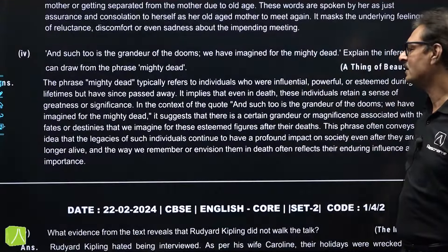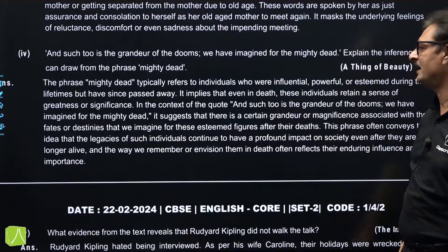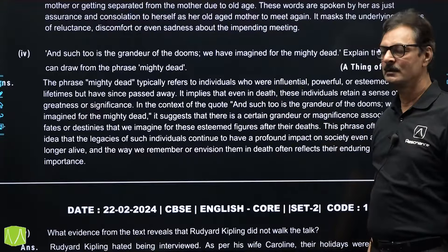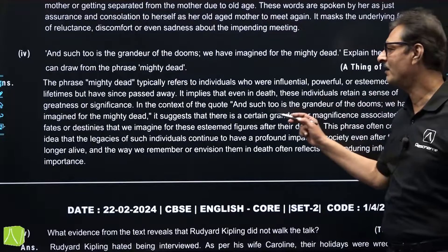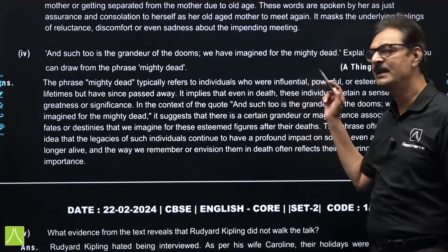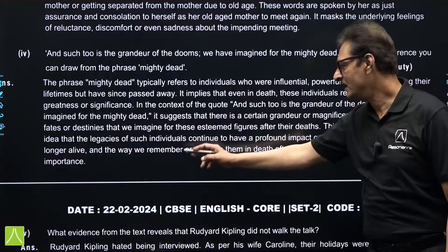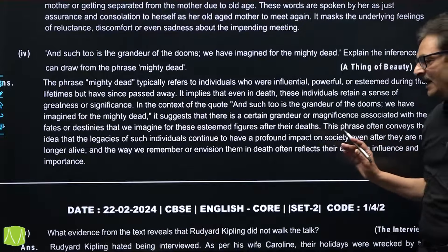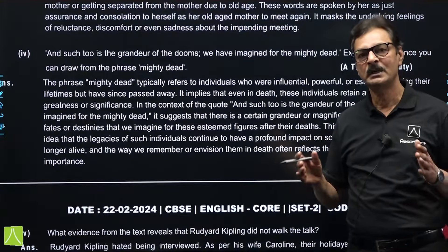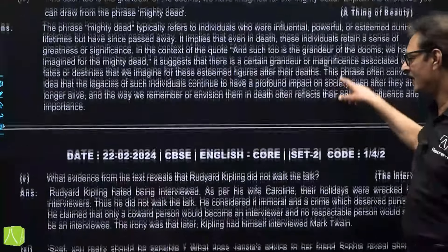The next question from 'A Thing of Beauty': explain the inference that can be drawn from the phrase 'mighty dead.' The phrase mighty dead typically refers to individuals who were influential, powerful or esteemed during their lifetime. Since they have passed away, it implies that even in death these individuals retain a sense of greatness or significance. We remember or envision them in death, which often reflects their enduring influence and importance. Even though they are no more, their tales which we read and listen to are a thing of beauty.